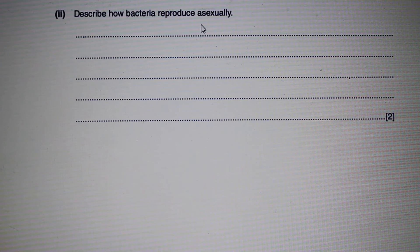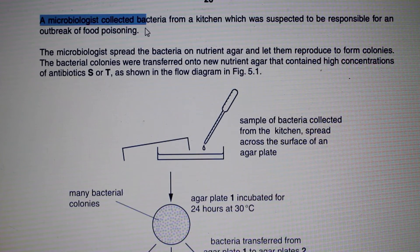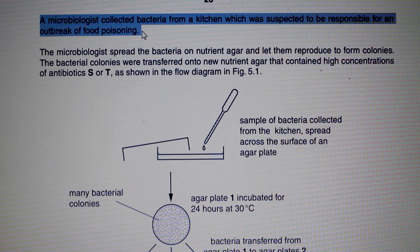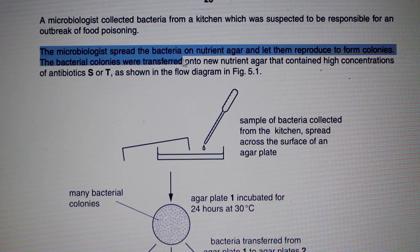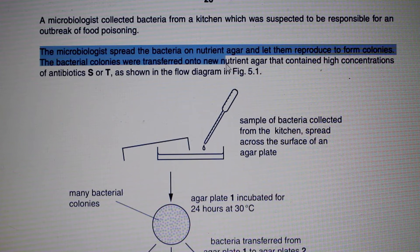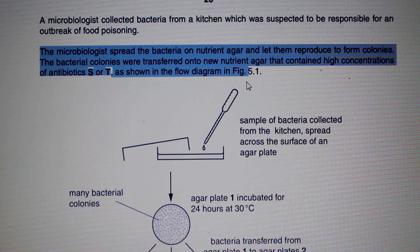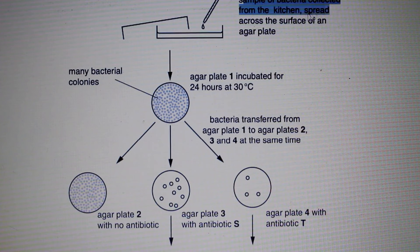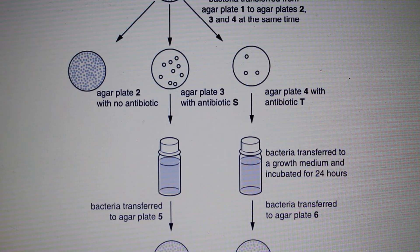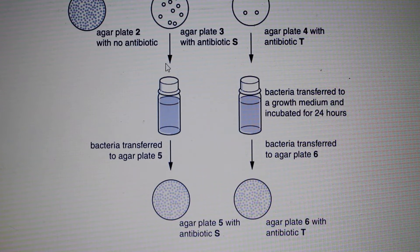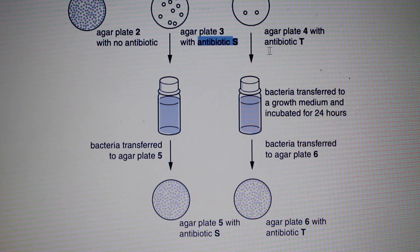Here is a longer question. A microbiologist collects bacteria from a kitchen suspected to be responsible for a food poisoning outbreak. The bacteria are spread on nutrient agar and allowed to reproduce into colonies, then transferred to new nutrient agar containing high concentrations of antibiotics S or T, as shown in figure 5.1. Agar plate 2 has no antibiotic, plate 3 has antibiotic S, and plate 4 has antibiotic T.